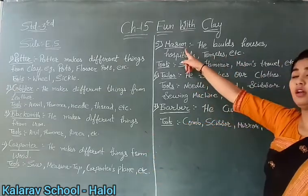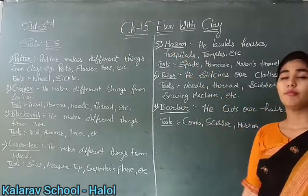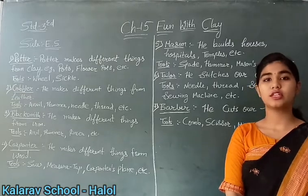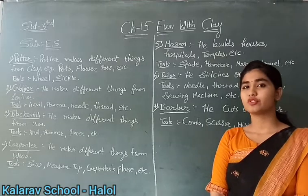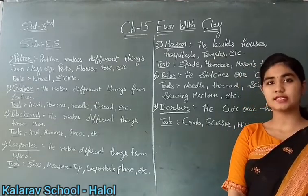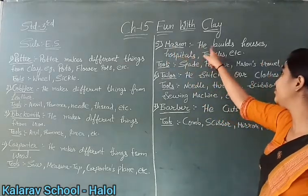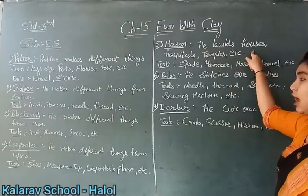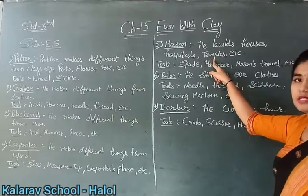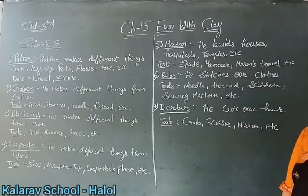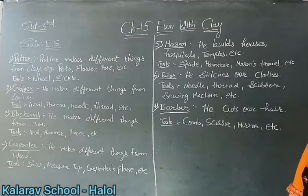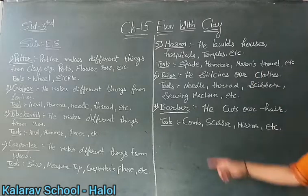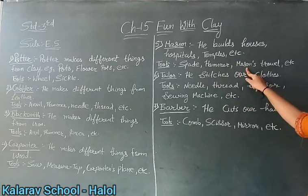Very good. Now we are moving to number 5. See, what is written? Mason. What work does mason do? The person who builds our houses, temples, and all these things is called a mason. Here you will write: he builds houses, hospitals, temples, etc. Which tools does mason use? He uses spade, hammer, mason's trowel, etc.